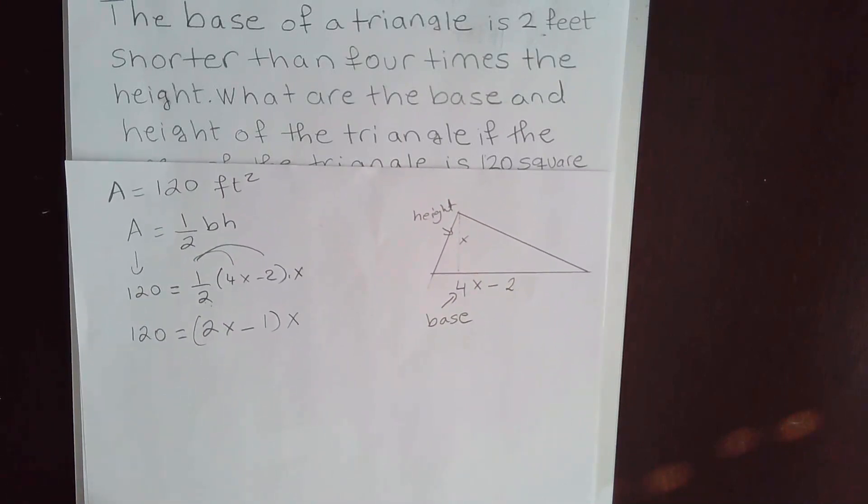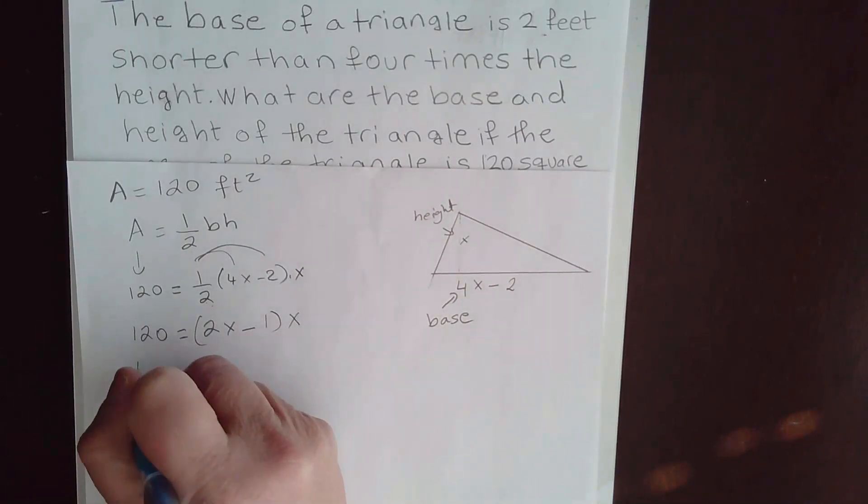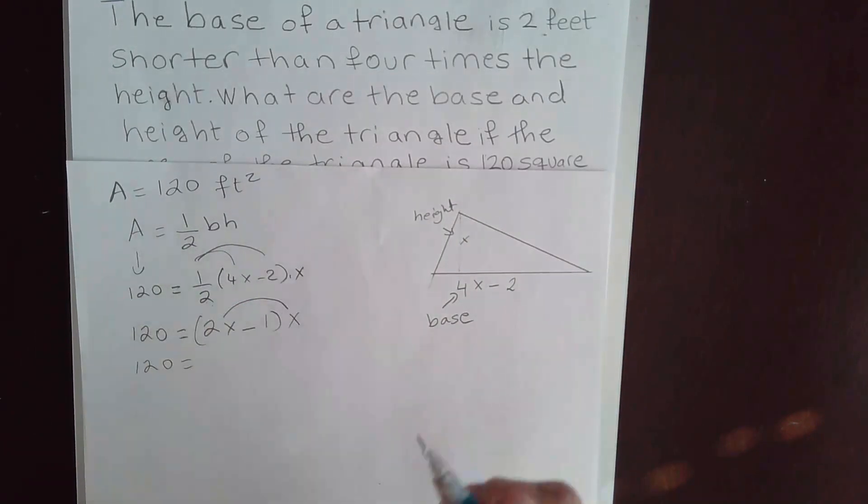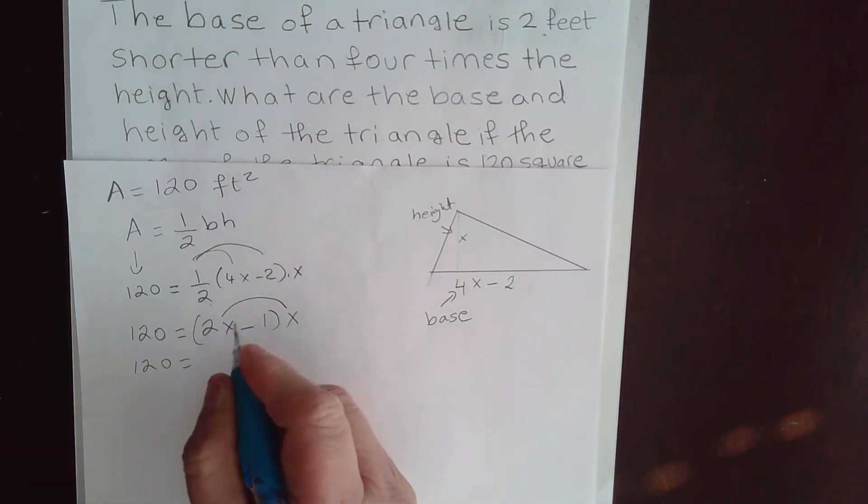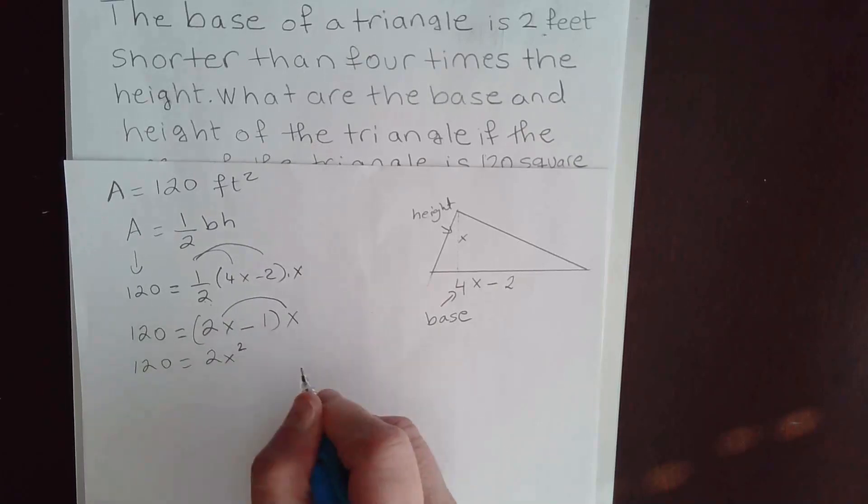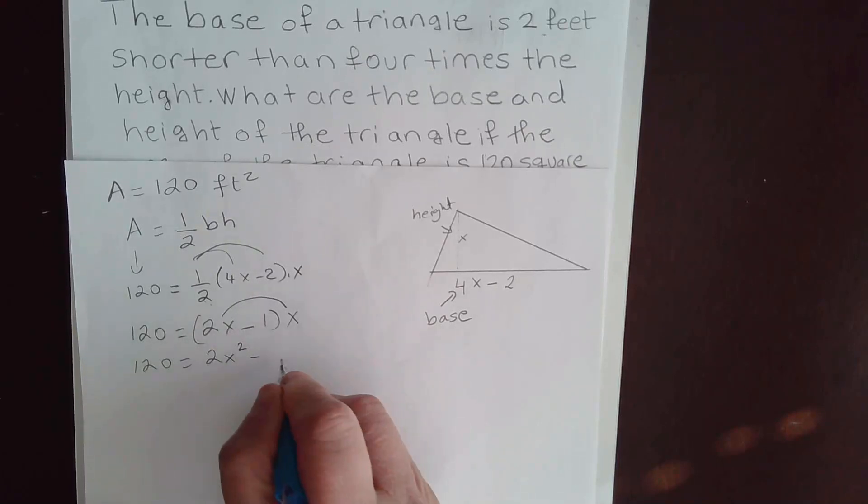Now we need to go ahead and solve this. We have parentheses. We need to clear the parentheses. We need to use the distributive property. 2X times X gives us 2X squared minus 1 times X is minus X.